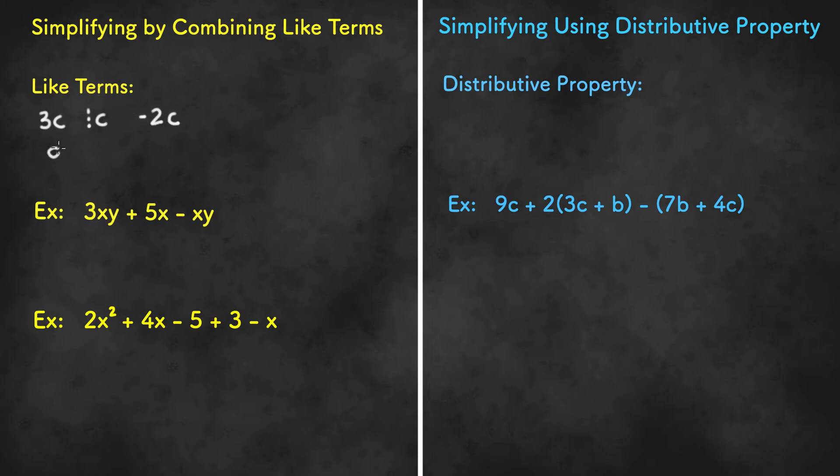Something that would not be like terms is 9c squared and c. Even though they do have the same variable, they don't have the same power. An easy fix is to change c to c squared.